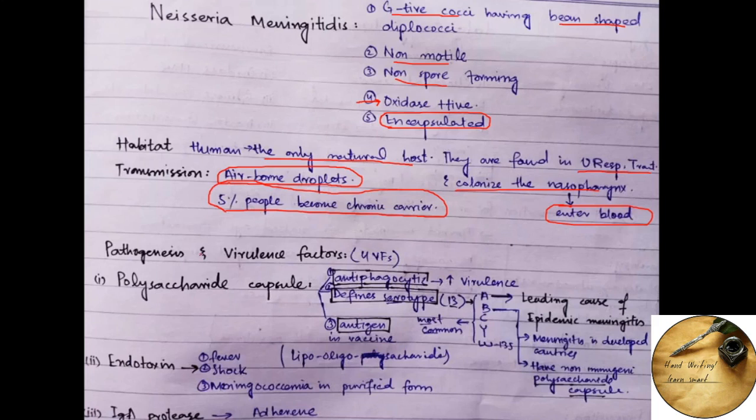Now, coming towards the pathogenesis and virulence factors, they mainly cause diseases by producing endotoxin or different enzymes through its polysaccharide capsule.